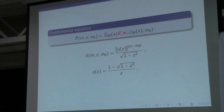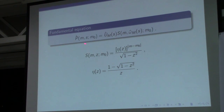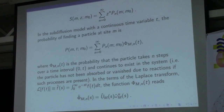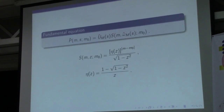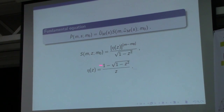This equation shows that if we know the generating function for the process under consideration, and if we assume the functions omega and Ψ, then we have the Laplace transform of probability. This is an important equation. The example of the generating function for the system without reactions is as follows.